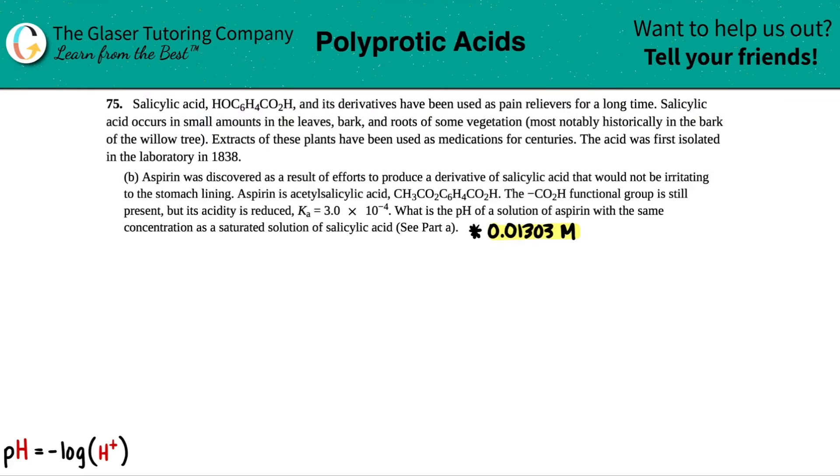75. Salicylic acid, HOC6H4CO2H, and its derivatives have been used as pain relievers for a long time. Salicylic acid occurs in small amounts in the leaves, barks, and roots of some vegetation, most notably historically in the bark of the willow tree. Extracts of these plants have been used as medications for centuries. The acid was first isolated in the laboratory in 1838.